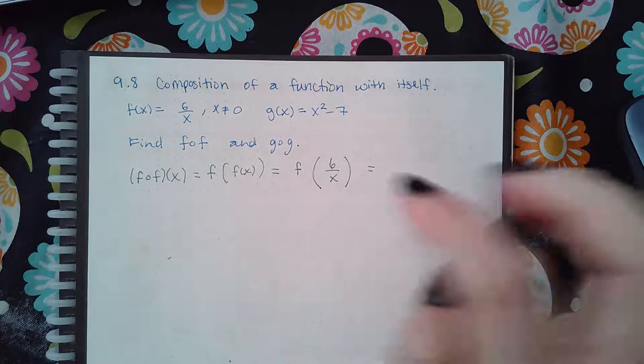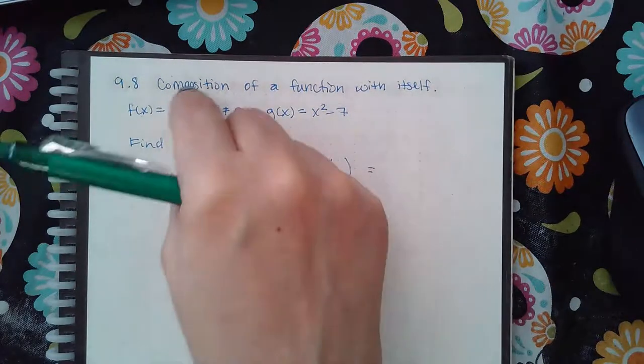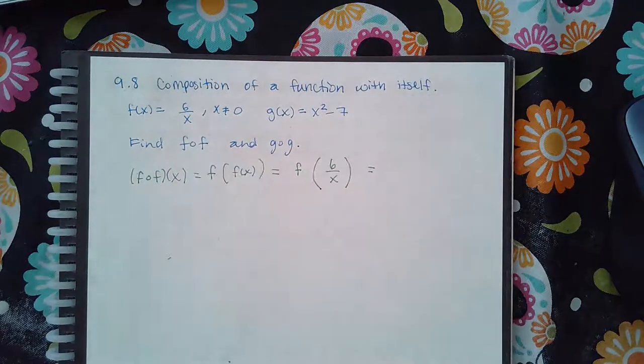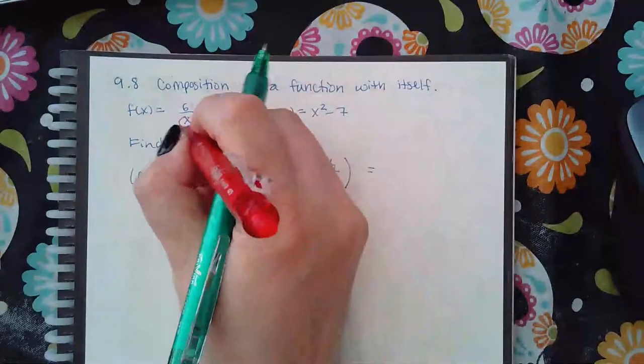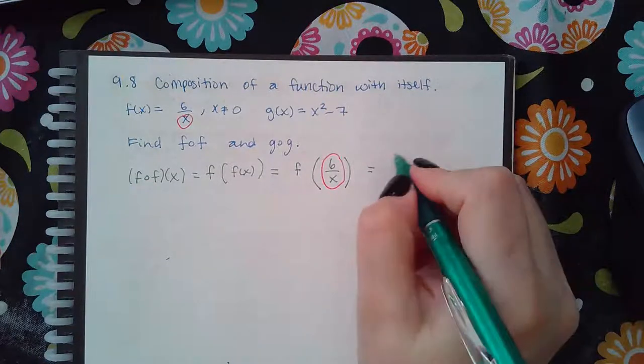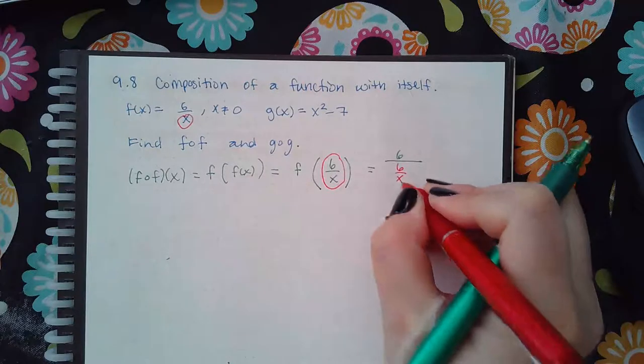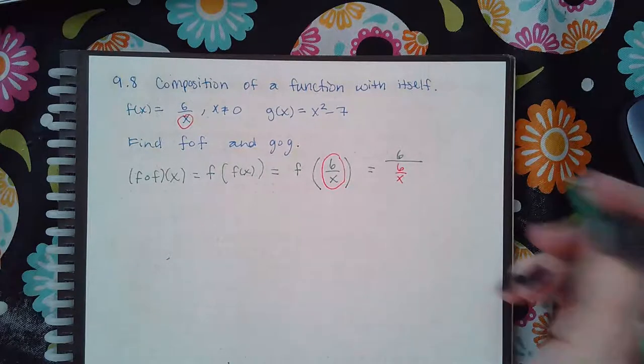Now what does it mean to have f of 6 over x? It means to take this function, and where there's an x, you're now going to plug in this. So it becomes this expression.